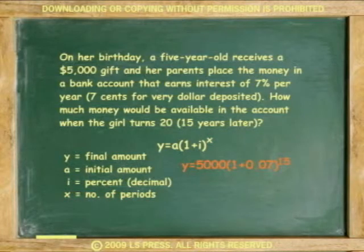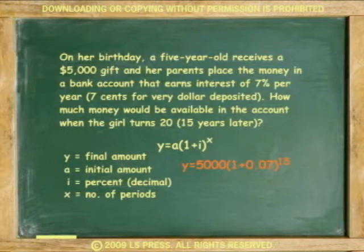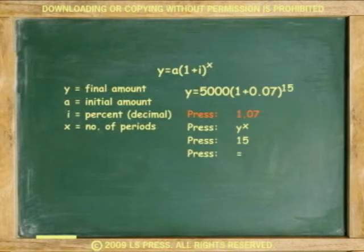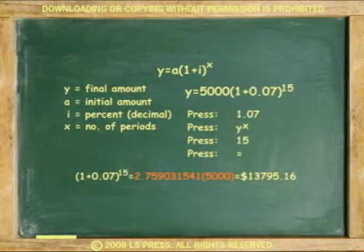Solving for y: y equals 5,000 times 1 plus 0.07 to the 15th power. Because multiplying 1.07 to the 15th power is tedious, we use the y-to-the-x function of a scientific calculator — the TI-35x. Press 1.07, press y to the x, press 15, press equals. Then multiply the answer by 5,000. Y equals 13,795.16.